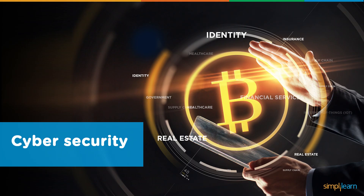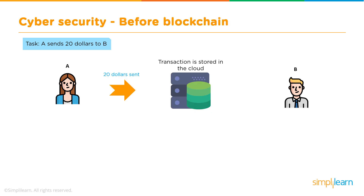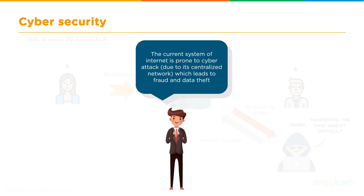Now let's look at how blockchain helps with cyber security. Imagine a scenario where A is sending twenty dollars to B. A sends the money and the transaction details are stored in the cloud. A hacker hacks the data within the cloud and tampers with it so that he receives the twenty dollars instead of B. This is the main problem with the current banking system — it is prone to cyber attacks because it relies on a centralized network, which can also lead to fraud and data theft.